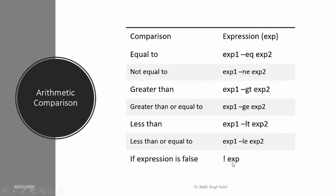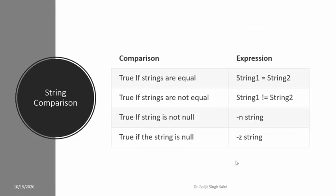If the expression is false, we simply use the exclamation mark with the expression. If you are doing string comparison, then you use the equal-to sign but with a space on both sides. Remember, if you don't give space on either side of the equal-to, this will become an assignment to the variable — because whenever we assign a value to a variable, we do not give space on either side. So this will evaluate to true if both strings are equal. To check if they are not equal, use exclamation-mark equal-to. To check whether the string is not null, use -n followed by the string. And -z will return true if the string is null.